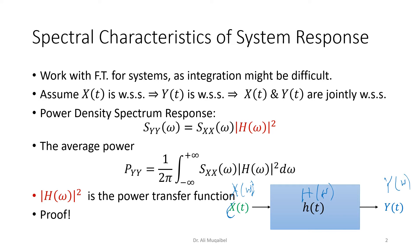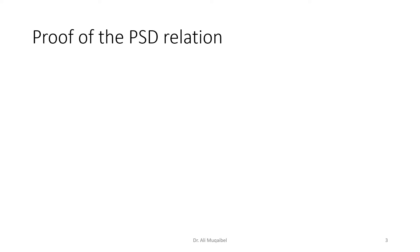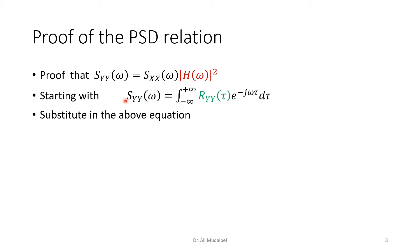One would argue: how did we get this relation to begin with? In the next slide we are going to prove how we got the power spectral density relation. The proof starts by reproducing the relation; we want to see how we get to it. Remember everything is based on the convolution relation. We recall that the output power spectral density is the Fourier transform of the autocorrelation of the output.